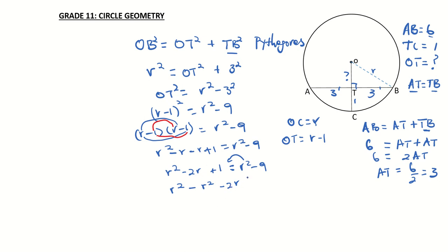Minus 2R plus 1 plus 9 as 9 moves over would be equal to 0. R squared cancels and we have minus 2R plus 10 equals 0. Minus 2R is equal to minus 10, so we divide both sides by minus 2 and we find that R is equal to 5.